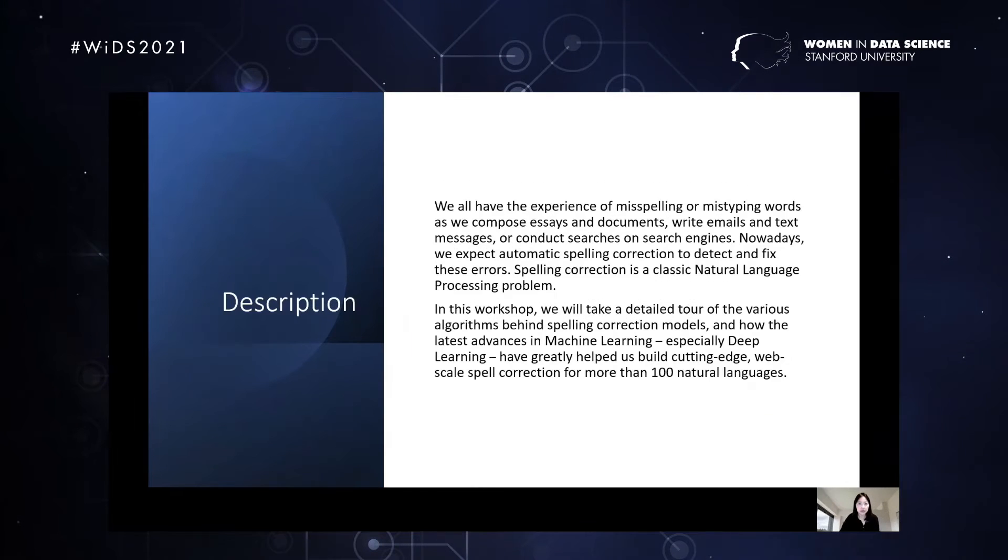We all have the experience of misspelling or mistyping words as we compose essays or documents, write emails and text messages, or conduct searches on search engines. Nowadays, we expect automatic spelling correction to detect and fix these errors. Spelling correction is a classic natural language processing problem. In this workshop, we will take a detailed tour of the various algorithms behind spelling correction models and how the latest advances in machine learning, especially deep learning, have greatly helped us build cutting-edge web-scale spell correction for more than 100 natural languages.